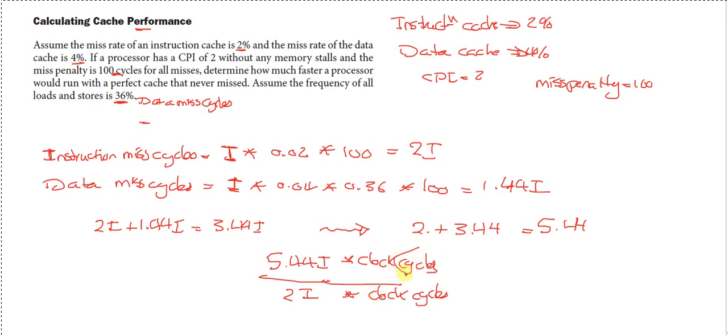That would cancel the clock cycles. I would cancel I, so the performance with the perfect cache would be better by 2.72.